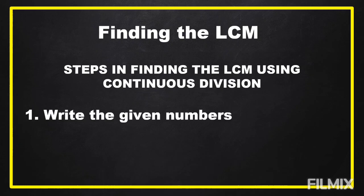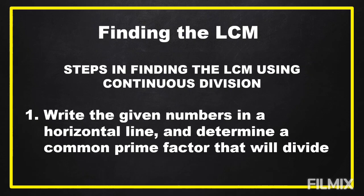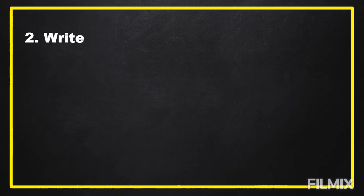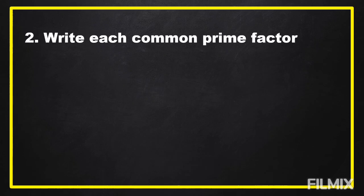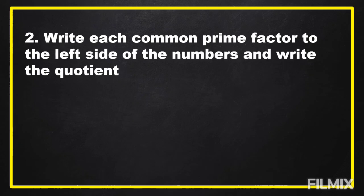Determine a common prime factor that will divide all the numbers. Number two: write this common prime factor to the left side of the numbers and write the quotient below the numbers. Repeat the process until there is no common prime factor or divisor.